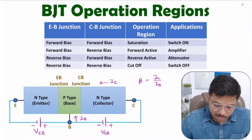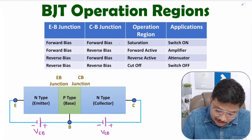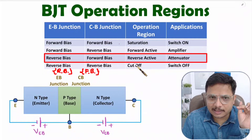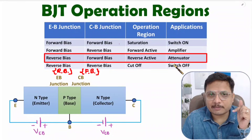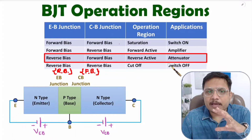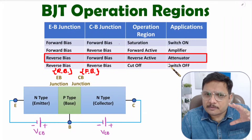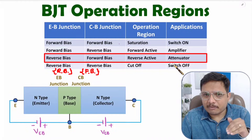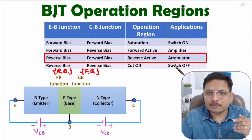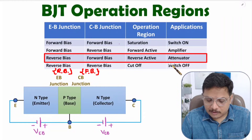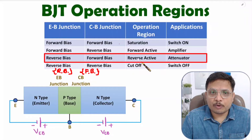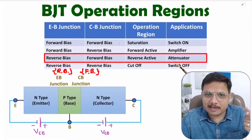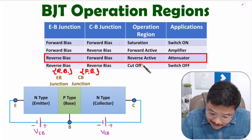Now let us talk about the third operational region: reverse active. The reverse active region is generally not used with BJT. The reason is that with reverse active, only one application is possible — the attenuator. An attenuator can be easily deployed with small components, so using a transistor as an attenuator is more difficult and costlier compared to a normal attenuator. That's why we don't use BJT in reverse active mode.